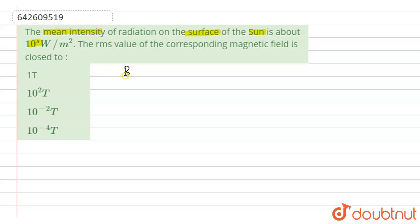So in this question we have to find out the B RMS value, that is root mean square value of magnetic field. Now we know.